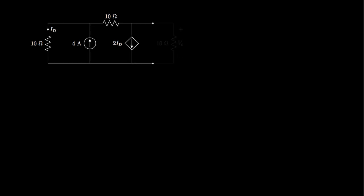What I'd like to do is show you how to do this by using the Thevenin equivalent circuit for all of the circuit to the left of this 10-ohm resistor. We want to replace this circuit between these two terminals with one independent voltage source and one resistance. The first step in solving for the Thevenin equivalent is always to find the open circuit voltage, which we'll label VOC between these two terminals.